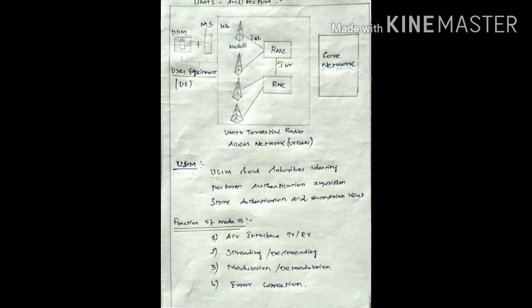User equipment consists of the mobile station and SIM card. USIM is nothing but universal SIM. You know very well that only the mobile station cannot be used unless it has SIM card. Universal SIM holds subscriber identity or user identity, authentication algorithm, authentication and encryption key.